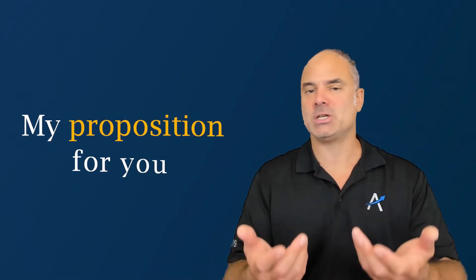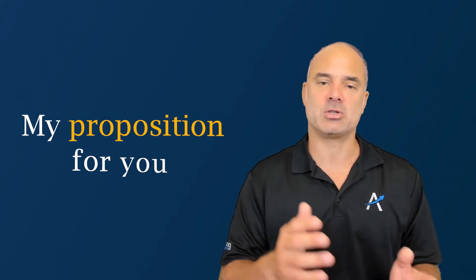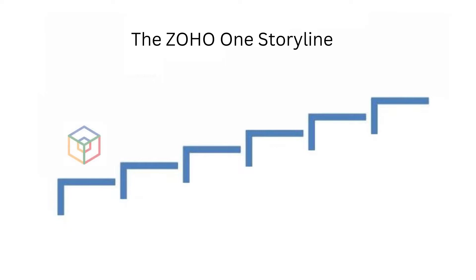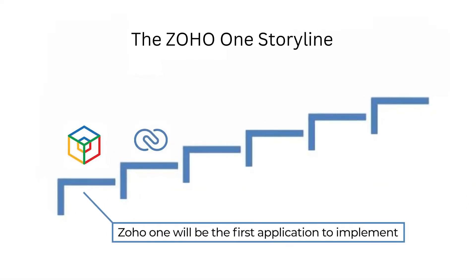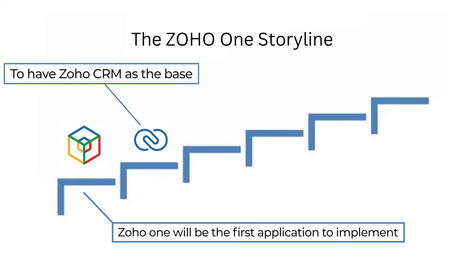My proposition to you is: when you are implementing Zoho One, think about it like a storyline. Zoho One will be the first application to implement, and that will take you probably a few hours — very quick and easy to understand, because Zoho One eventually is just a license. Once you install Zoho One, you will need to go to Zoho CRM. Even if you're trying to use Zoho Books or other applications, I recommend you to have Zoho CRM as the base — the place that holds all your customers, all your accounts, all your items, everything that you have in your business — and then connect with the rest of the applications.